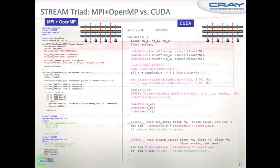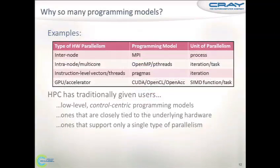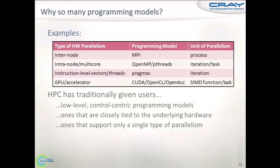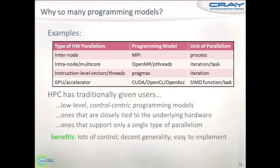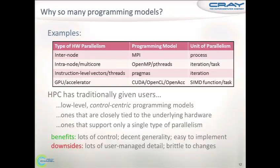So basically, these are several programming models, and they all give us a kind of close-to-the-machine feel. For inter-node distributed memory parallelism, we have MPI. For multi-core, we have OpenMP. For accelerators, we have CUDA, OpenCL, and so on. In order to squeeze the last bit of performance, these models let us be control freaks — because we have pretty good control over stuff. But control freak once, control freak forever.